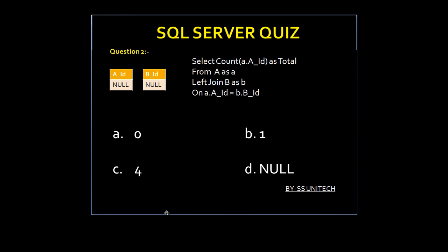This is our question and your time starts now. Time up. Option A is true because when null values are used in aggregate functions like SUM, COUNT, or AVERAGE, then null values would be skipped. So option A is true. Let's move to another question.